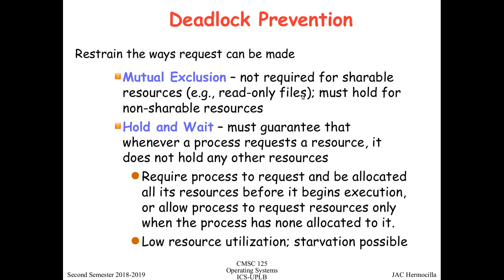In this video we're going to talk about the first approach to handling deadlocks, which is deadlock prevention. The idea is that for a deadlock to happen, the four conditions must all be satisfied. So in deadlock prevention, the main approach is to prevent at least one of those conditions from happening.